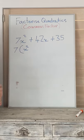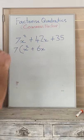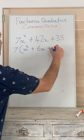How many times can it go into 42? 6. How many times can 7 go into 35? 5.